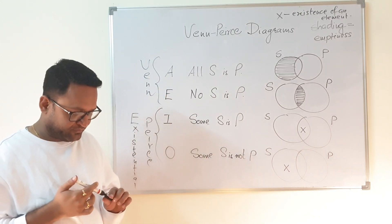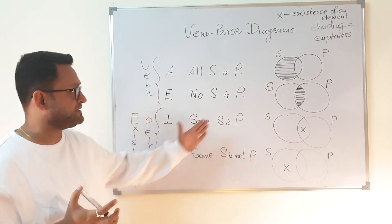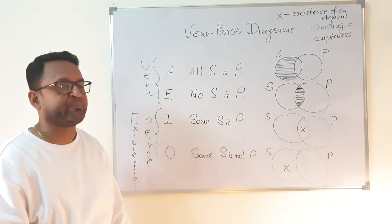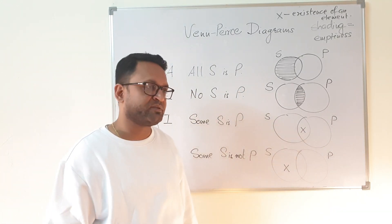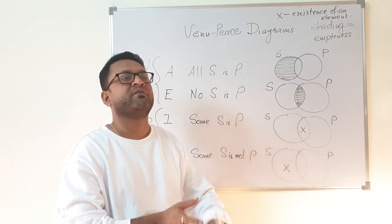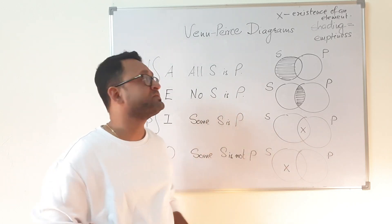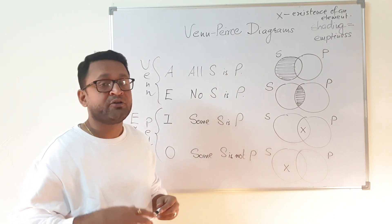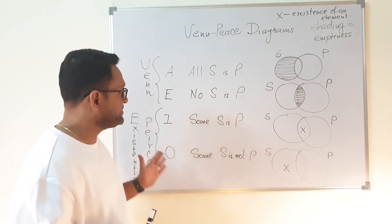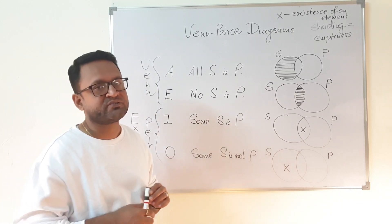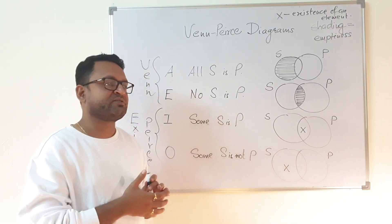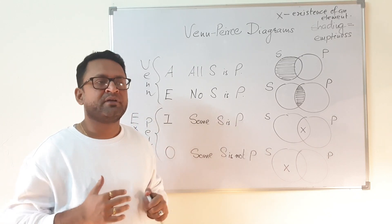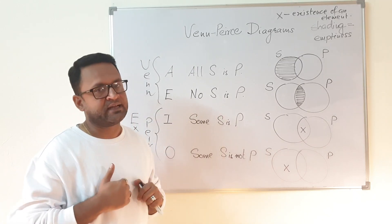So this is the idea of Venn-Peirce diagrams. When we move to the next step — discussing syllogisms — we will use this Venn-Peirce diagrammatic technique to test the validity of syllogisms. This was all about categorical propositions; I took around three lectures to give you a brief overview. We will do exercises in class. Thank you.